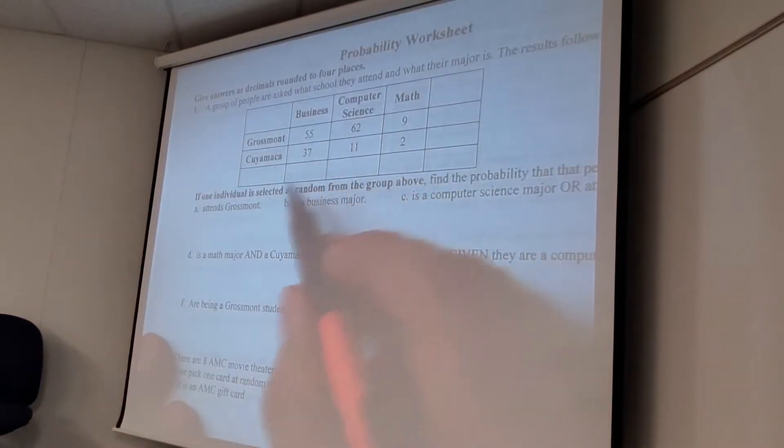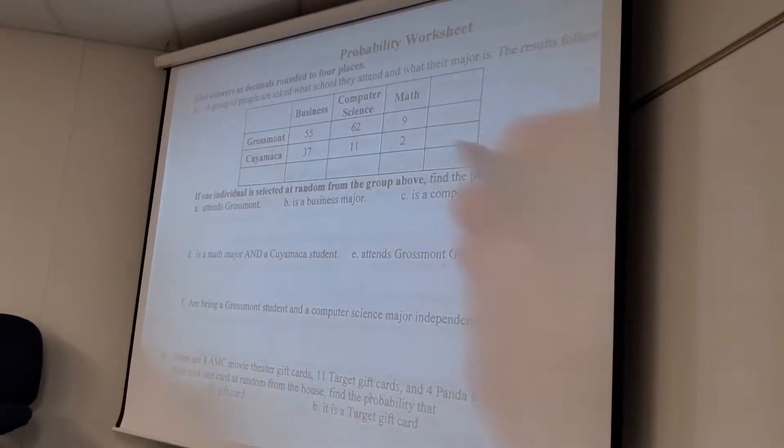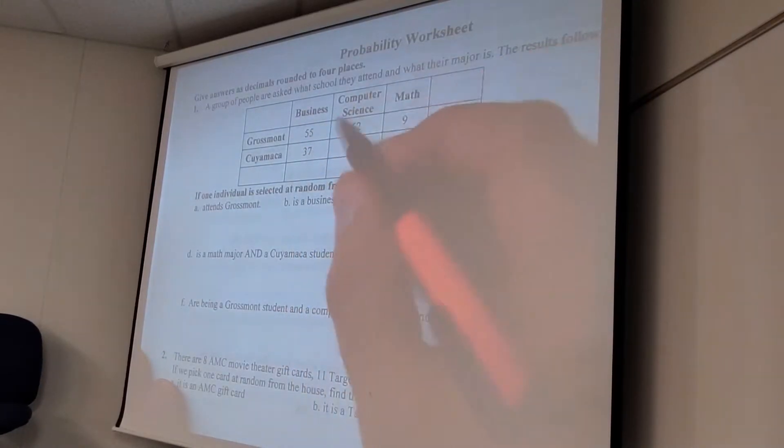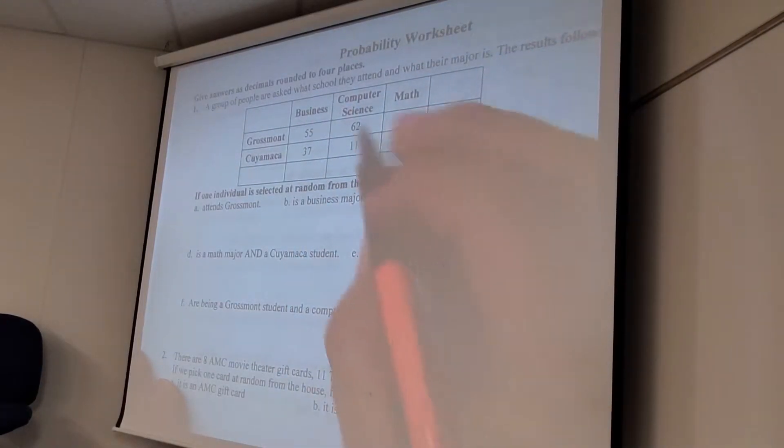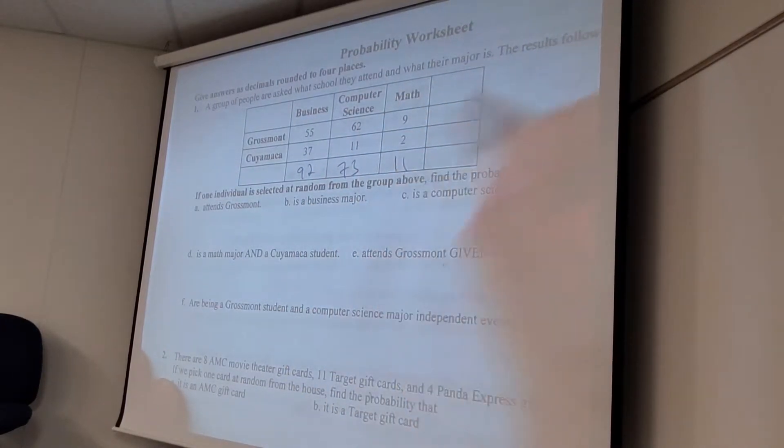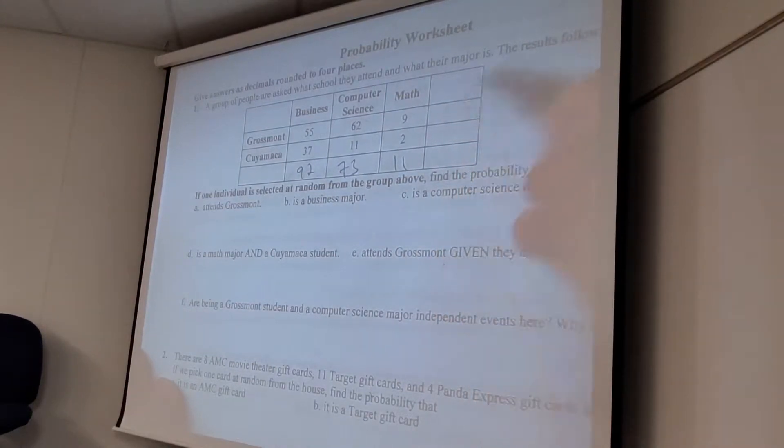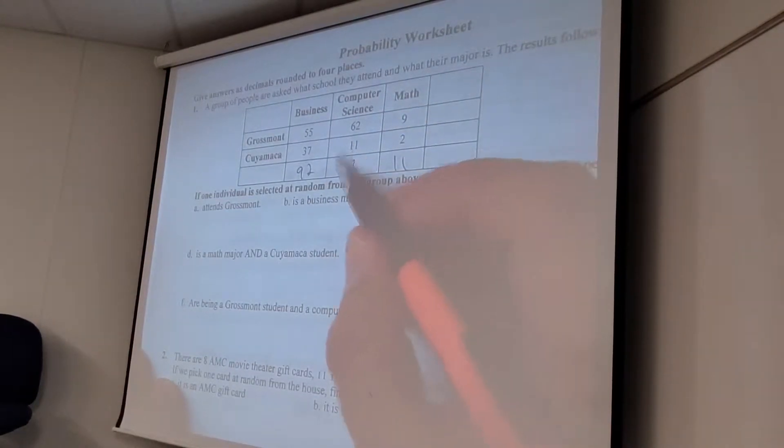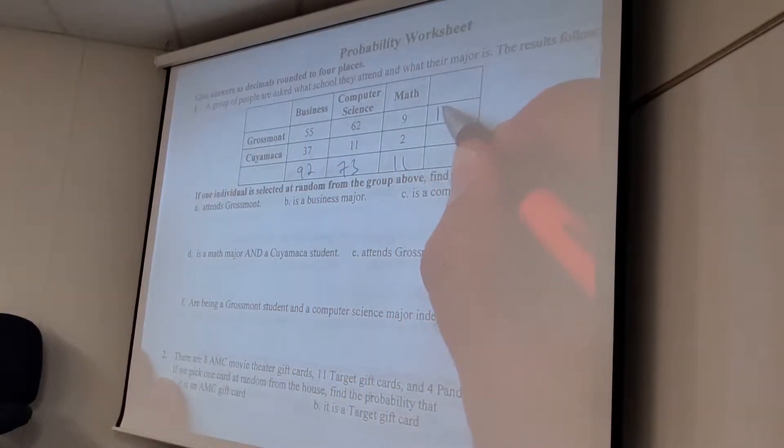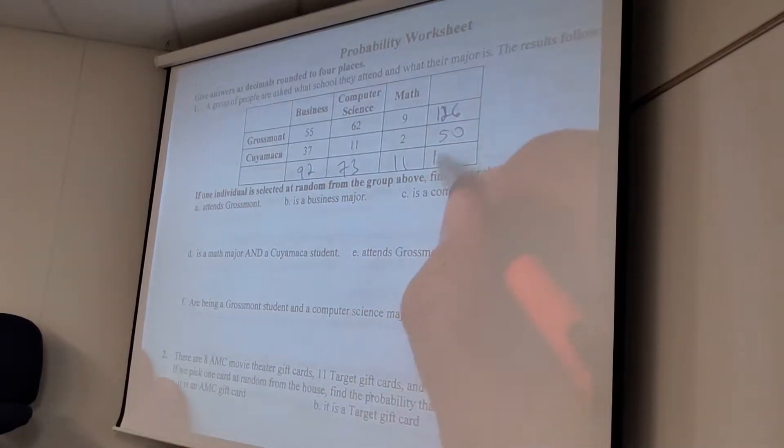So when I give you this kind of problem, I'm always going to give you these blank spaces because I am way too nice. So obviously, I'm hoping that even if you have no idea, you can fill in these blank spots. So this should be 92, 73, 11. What is that? 126. And then 50? Sweet.